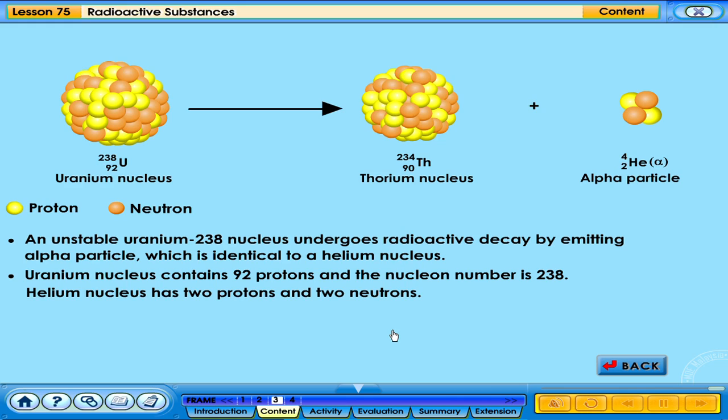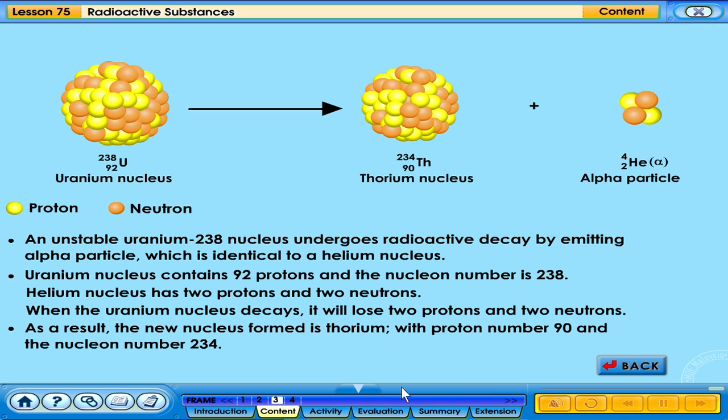Helium nucleus has two protons and two neutrons. When the uranium nucleus decays, it will lose two protons and two neutrons. As a result, the new nucleus formed is thorium with proton number 90 and the nucleon number 234.